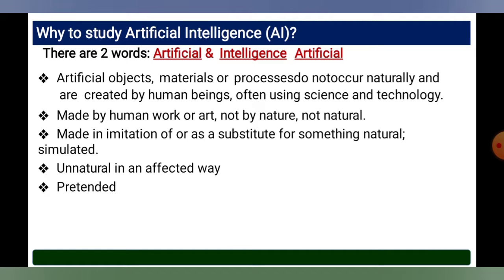Coming to the next slide: why study artificial intelligence? Before answering that, we will first understand the two words — artificial and intelligence. What is artificial? Artificial objects, materials or processes do not occur naturally and are created by human beings, often using science and technology. Artificial means made by human work and art, not by nature — made as a limitation or substitute for something natural, or simulated in an unnatural or pretended way.